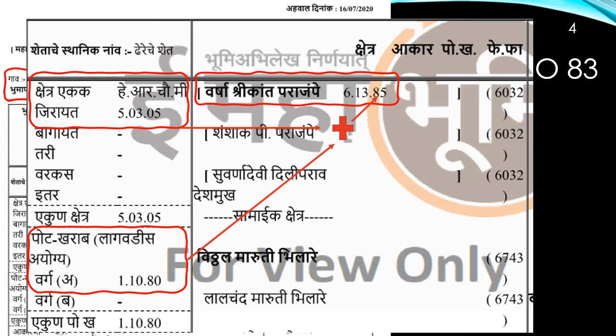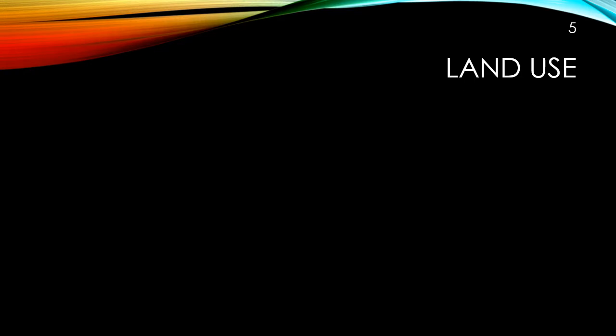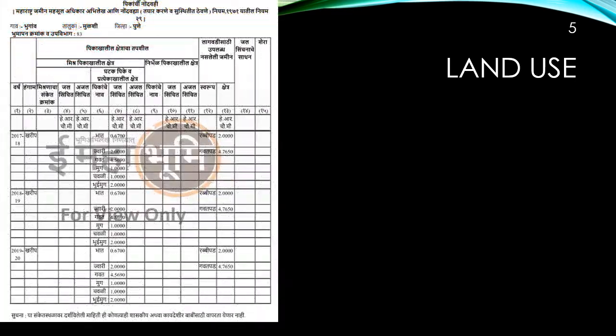So in essence this plot of land is agricultural as per the records of the government. If you add up these two numbers — 5.0305 plus 1.1080 — it comes to the total area of survey number 83. We shall now see what the land is used for and what the produce of the land is.